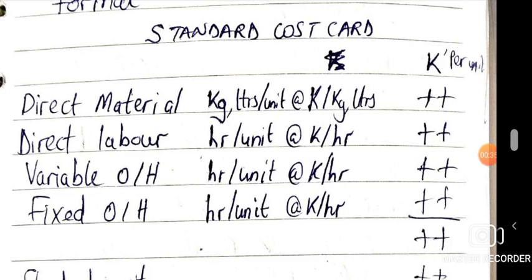So how does the 'per unit' column come about? For example, with material you'll find kg per unit because material is measured in kilograms or liters. Then you also find the cost per kg. When you multiply those two figures together, they give you the cost per unit — that's how you get that cost-per-unit figure. It even makes sense as we look at an actual example.